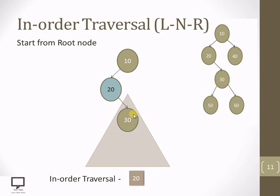So this subtree now we are going to consider. For node 30, what will be my first step? My first step is to check whether 30 is having its left child or not. What is my first condition? Check for a left child. Yes, 30 is having its left child. You can see over here.